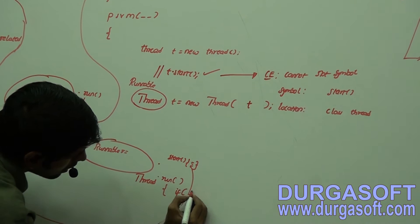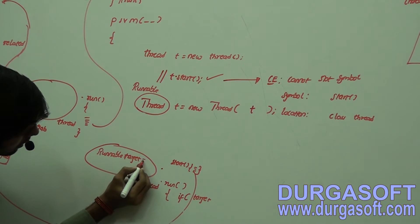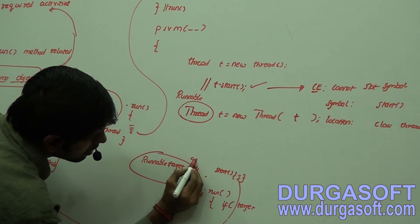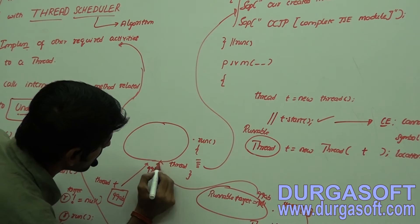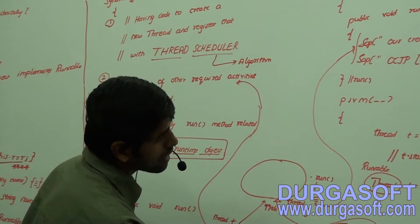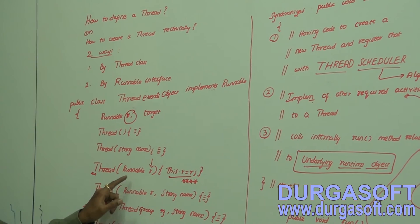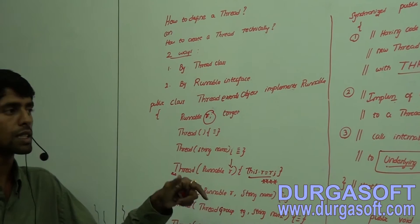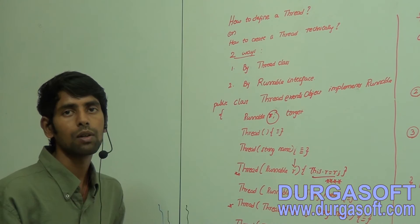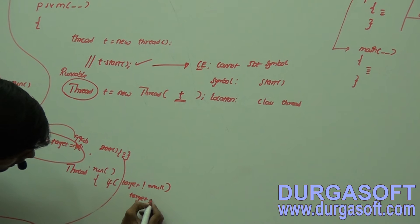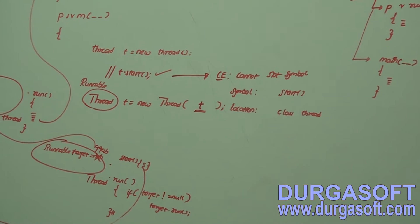Inside the run method of Thread class, there is a check: if target is not equal to null - target is a field. Because of passing t to the constructor, this target will get the value of the reference, like 'double-line ab'. So indirectly this target is referring to our custom thread object. The Runnable target gets initialized because the Thread class constructor with Runnable argument initializes target using an init method.